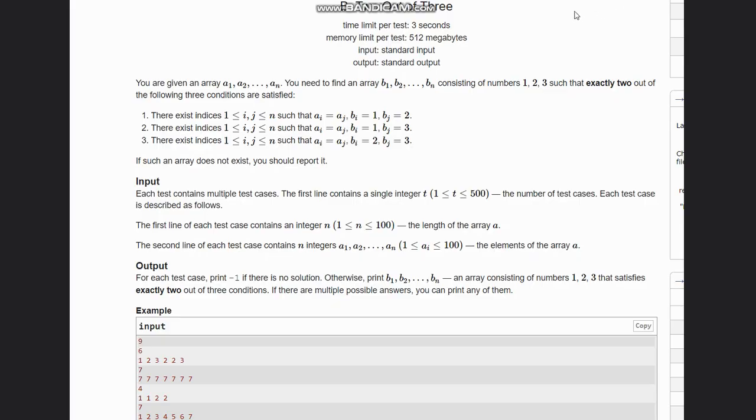Hello everyone, welcome back to the channel. Here we are discussing Codeforces Round 908 F2. The problem states 2 out of 3. You are given an array a1 to an, and you need to